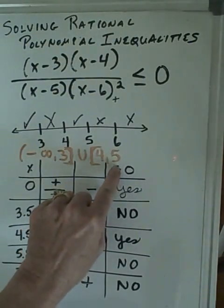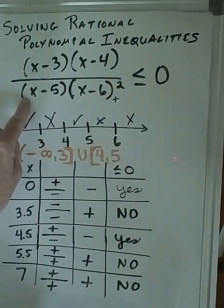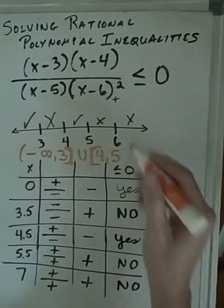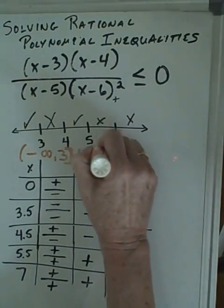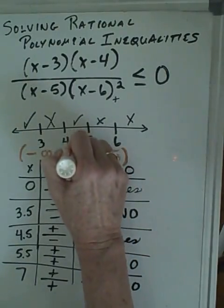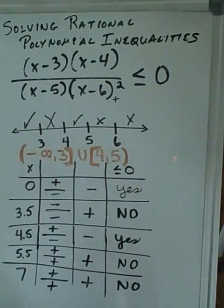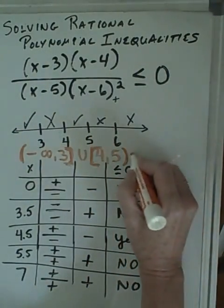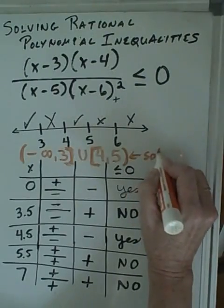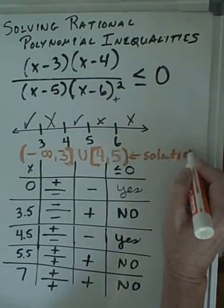But when we get to 5, we can't include it because 5 would make our denominator zero, so it would have to be a parenthesis there. So we'd have two sets of brackets and a parenthesis, and this is our solution to the inequality.